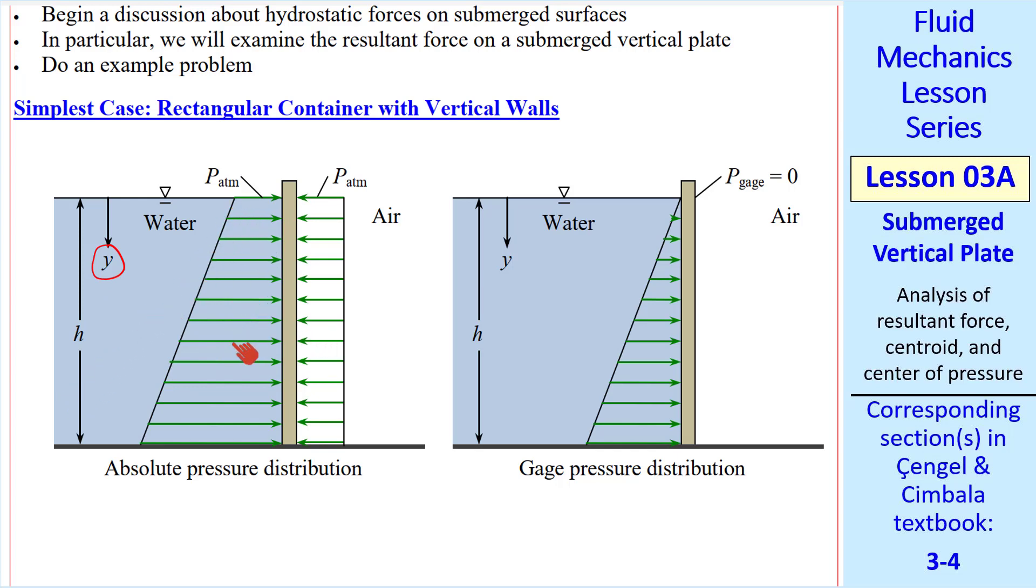Here's the pressure distribution in absolute pressure, P atmosphere at the top, and then increasing linearly as we go down. If we subtract off atmospheric pressure on both sides, we get the gauge pressure distribution. So P gauge is zero on the right side of the plate and starts from zero and increases linearly to the bottom.